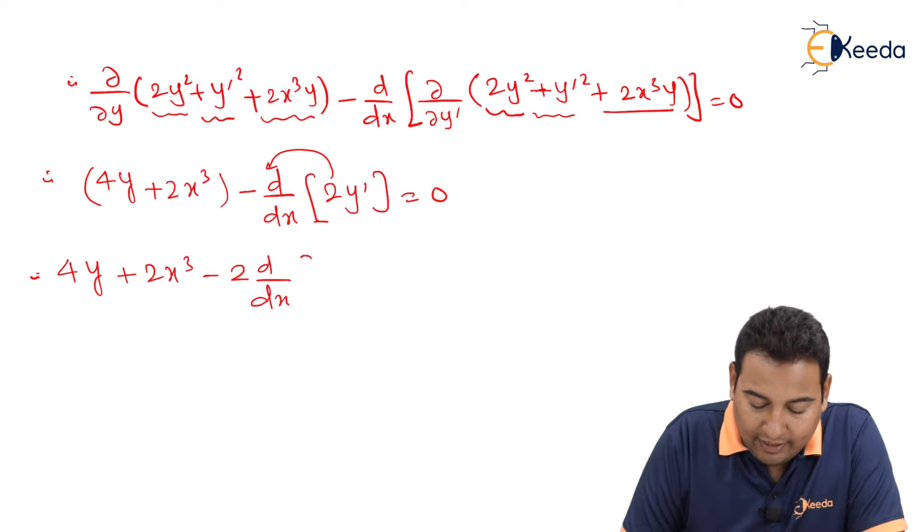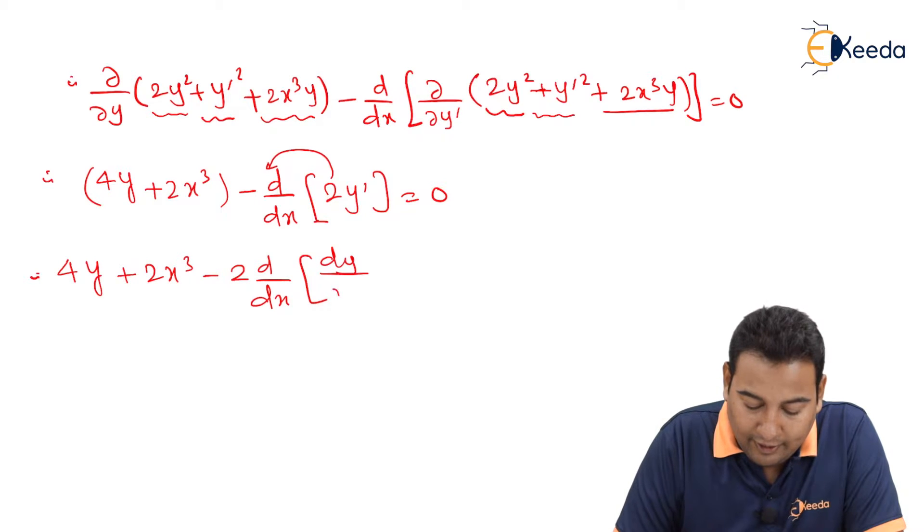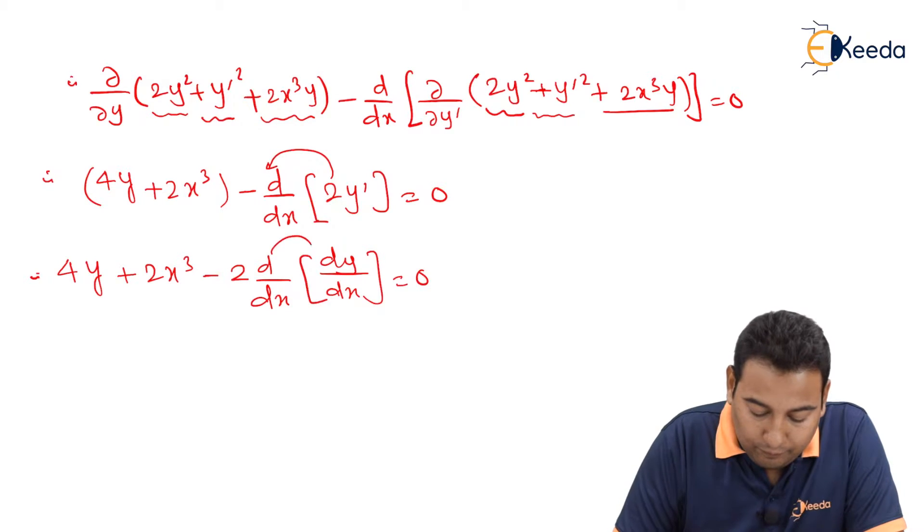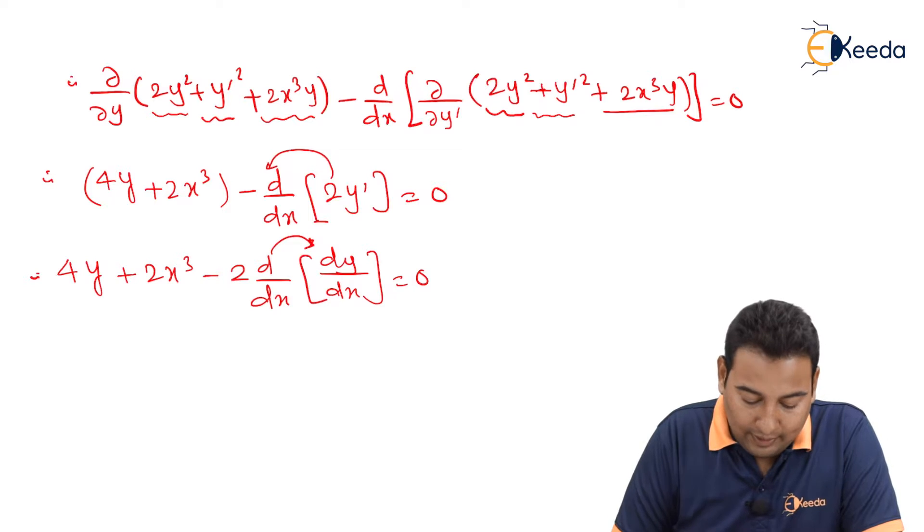d/dx and this y dash will be written as dy/dx. This will go in and will become d²y/dx² equal to 0.